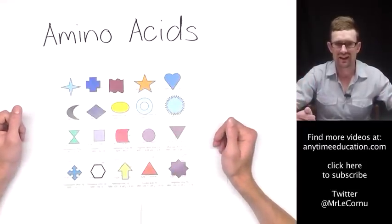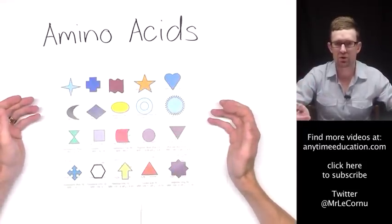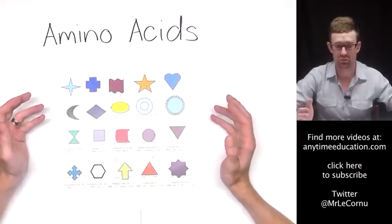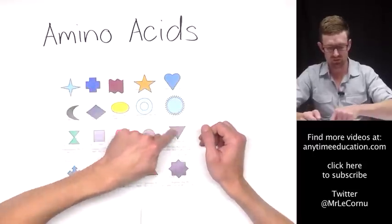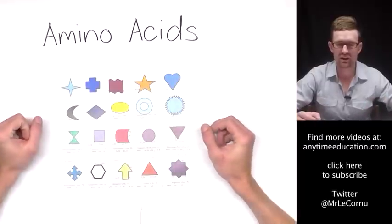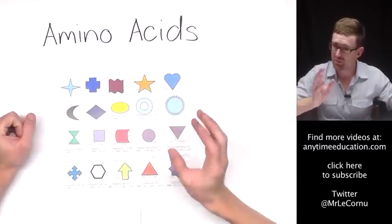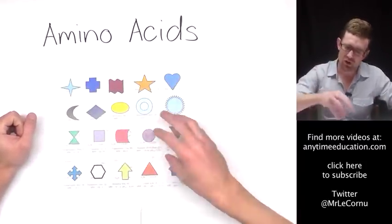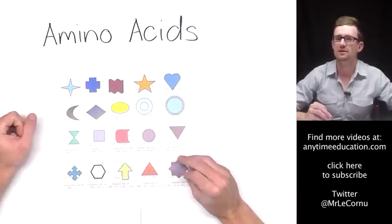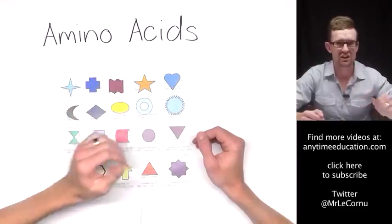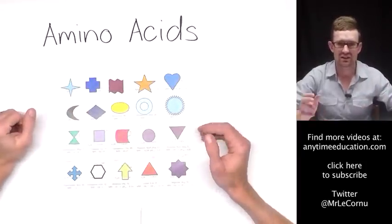Imagine putting those shapes into different combinations. Whatever the combination was would determine the structure of the overall product, and that's exactly what happens with proteins. We know how critical structure is to the function of a protein, and that structure will be dependent on the sequence of these amino acids and that they're in the particular order that they need to be in. How do we know what sequence to put these amino acids? Well that's due to the A's, T's, C's and G's in our genes.